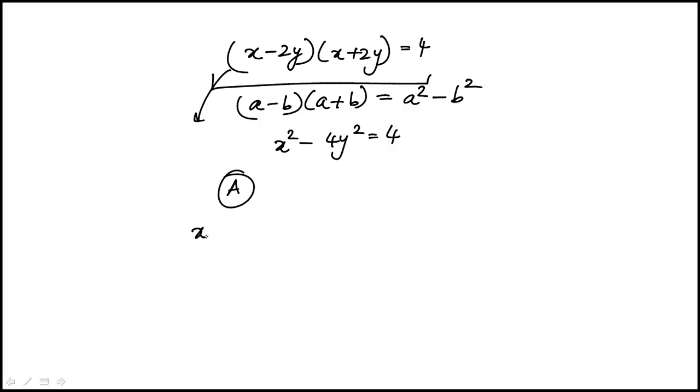And we're told that quantity A here is x squared minus 4y squared. So quantity A is 4, whereas quantity B is 8. So the correct answer is B.